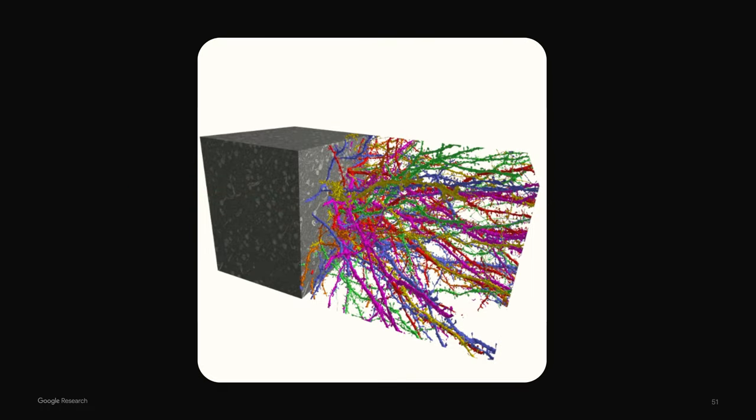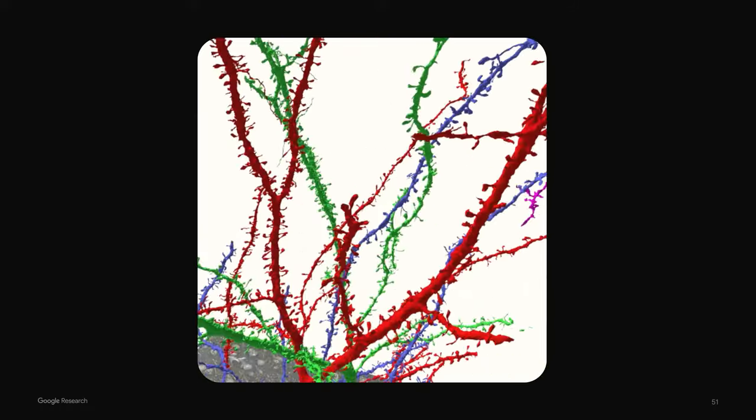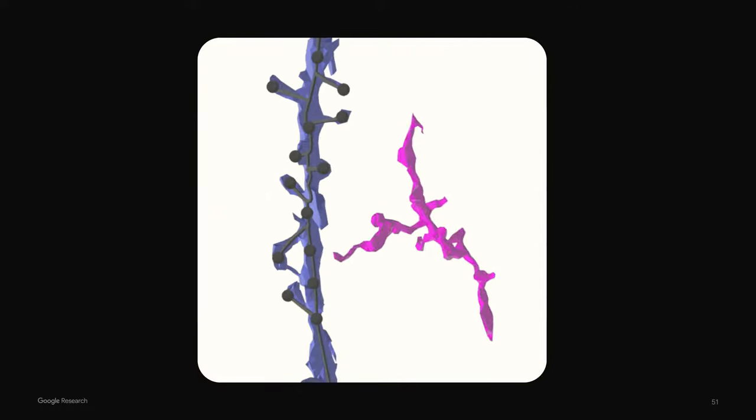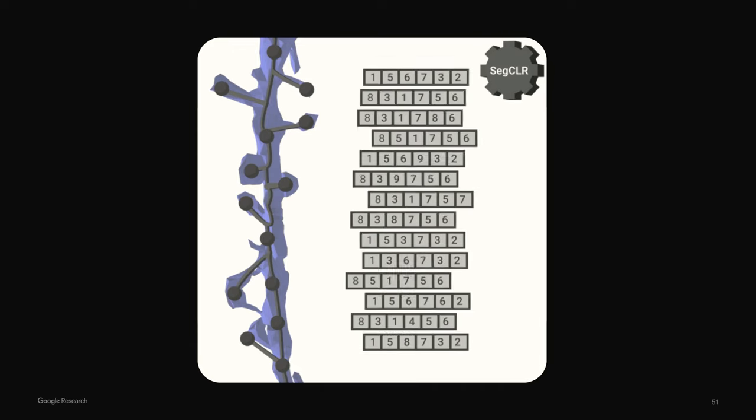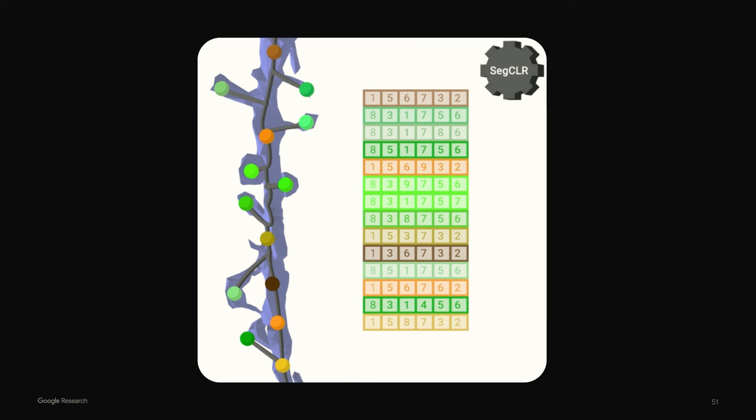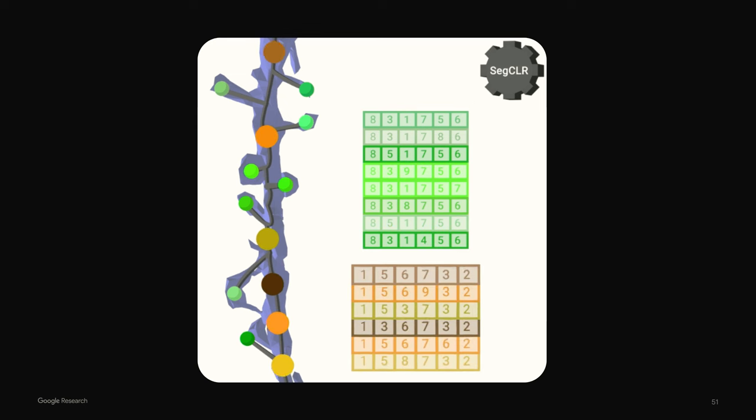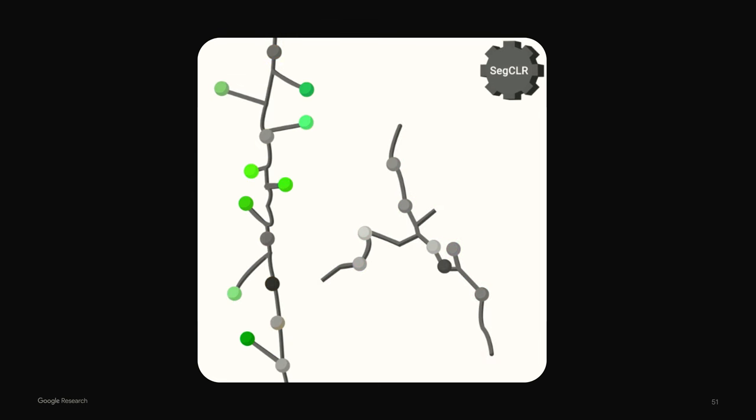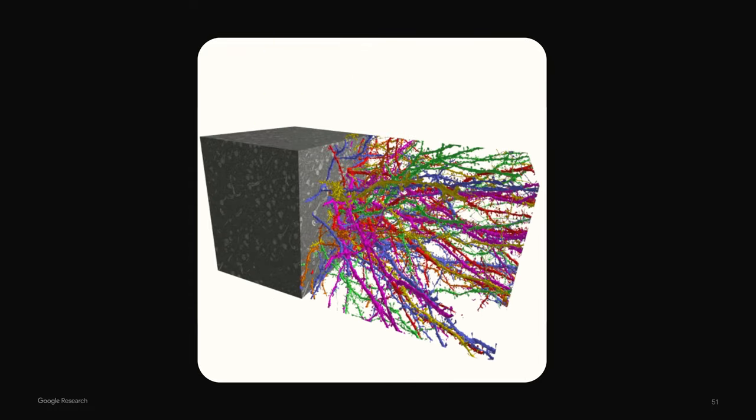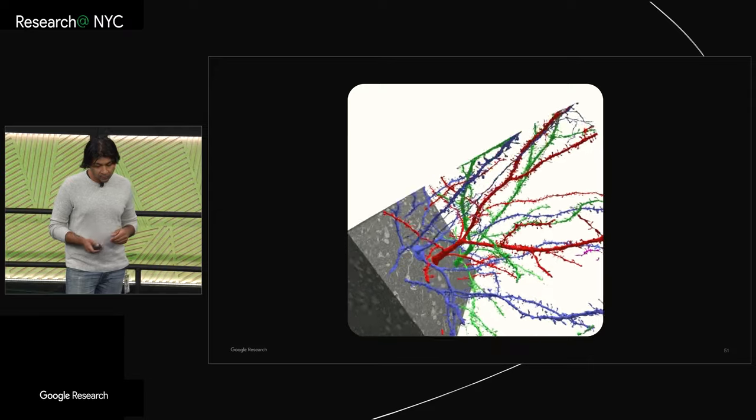More recent innovation has been a self-supervised learning technique for connectomics that learns representations of the data that can be used to identify different parts of neurons and what particular type a neuron is based purely on patterns in the data itself, with only minimal human labeling required. This technique is called segmentation-guided contrastive learning of representation and is currently in press at Nature Methods. The method of machine learning employed here is in some ways similar to what is used to train large language models but more specialized for the type of data that we see in connectomics.